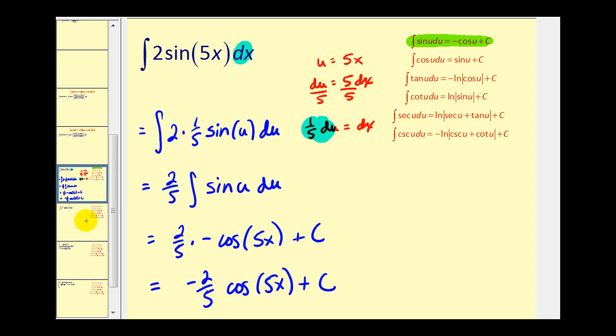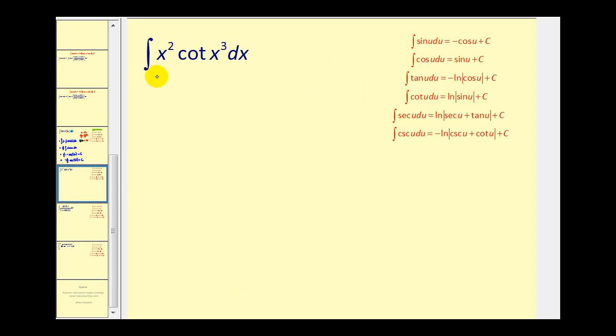Let's take a look at another example. Here we have the integral of x² cot(x³) dx. Notice in its current form it doesn't fit the basic integral formula for cotangent u. But since we have x³ here and x² here, this should remind us of u-substitution.